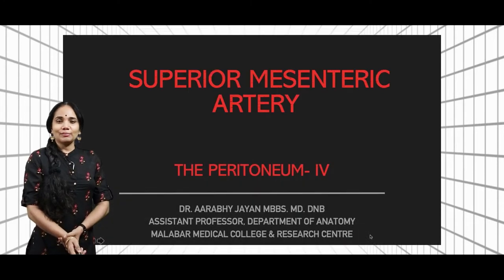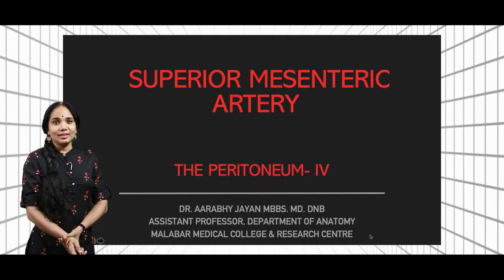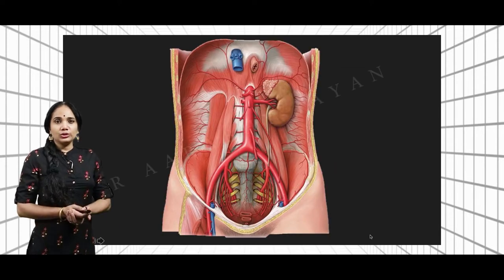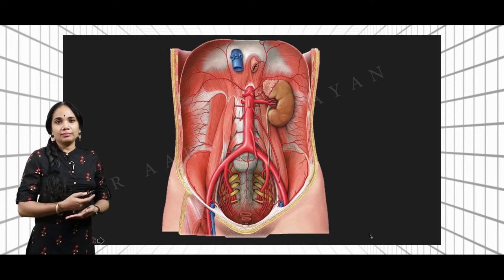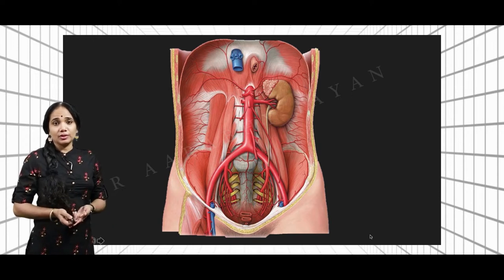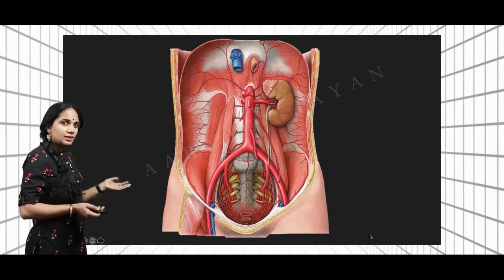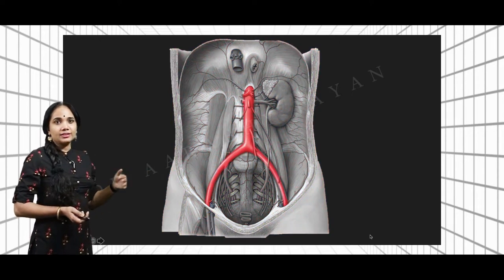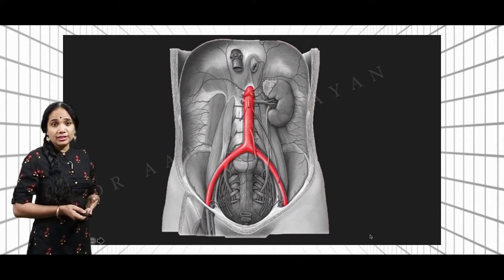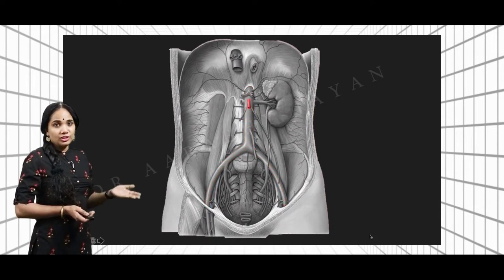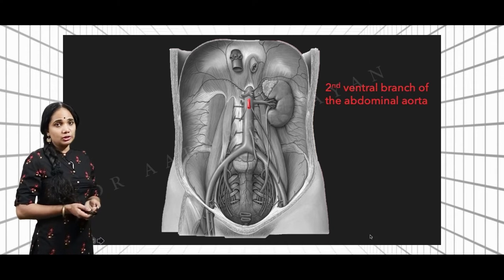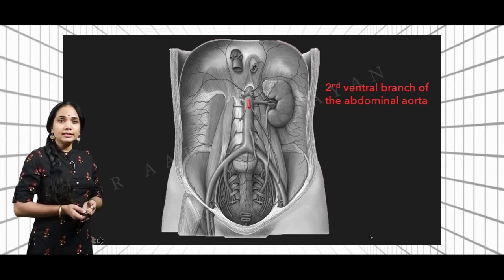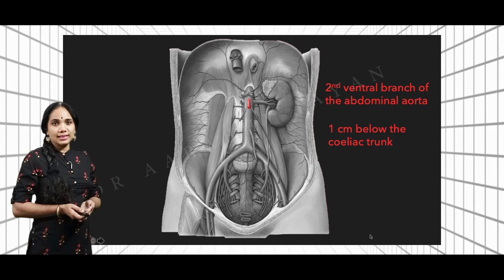Let's talk about the superior mesenteric artery, which is the artery of the midgut. Once you remove all the structures in the greater sac of the abdomen, you see the posterior abdominal wall structures. Among these, let us highlight the aorta and the superior mesenteric artery, which is the second ventral branch of the abdominal aorta, originating around one centimeter below the celiac trunk.